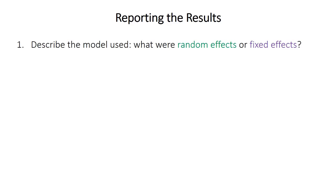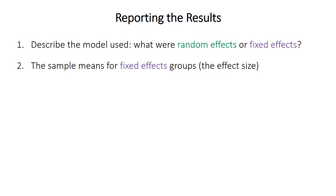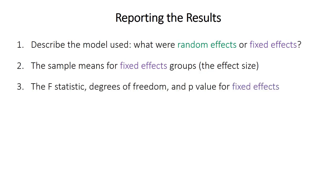When reporting nested ANOVA results, first describe the structure of the model used — what were the random effects and fixed effects. Report the sample means for any fixed effect main groups, as this is the effect size we care about. Report the F-statistic, its two degrees of freedom — one for between groups and one for between subgroups mean squares — and the p-value for the fixed effects. This information helps decide whether the effect is meaningful.